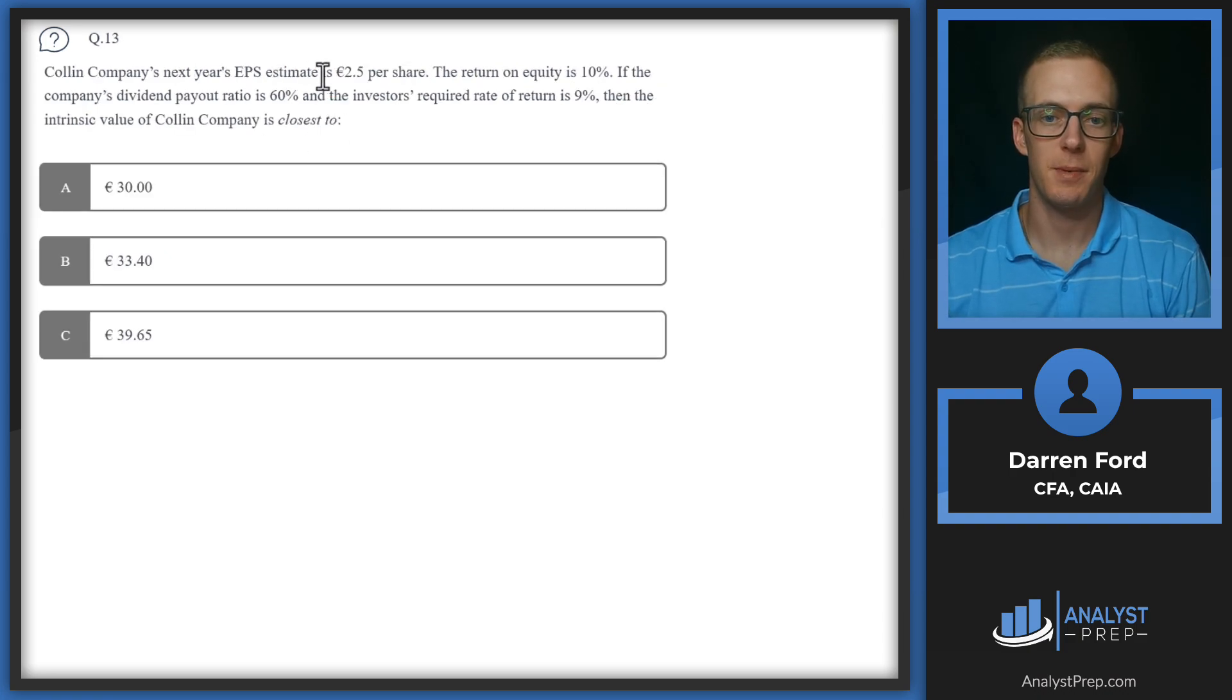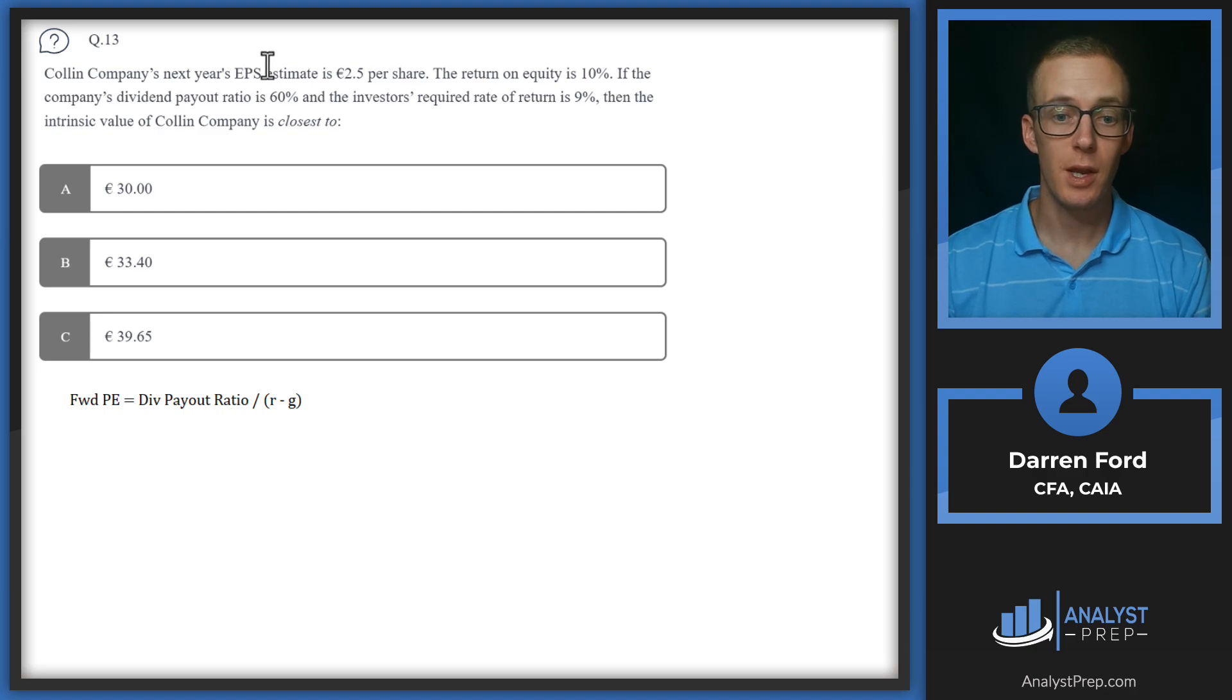Question 13. Collin Company's next year EPS estimate is 2.5 per share. The return on equity is 10%. If the company's dividend payout ratio is 60% and the investor's required rate of return is 9%, then the intrinsic value of Collin Company is closest to. We're going to calculate a forward PE multiple, which is price over earnings. If we multiply the EPS by the PE multiple, that's going to give us the share price. The PE multiple is essentially giving you the price per dollar of earnings. The forward PE equals the dividend payout ratio, which we're given at 60%, divided by R minus G. R is the required rate of return by investors, and G is growth, which we are not given.